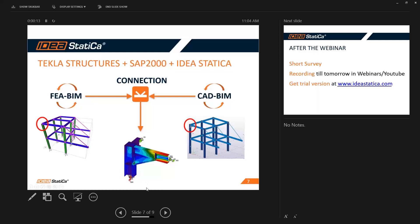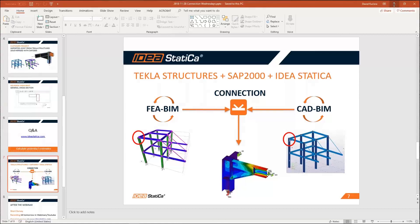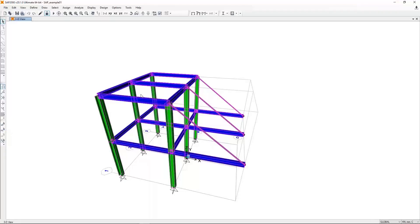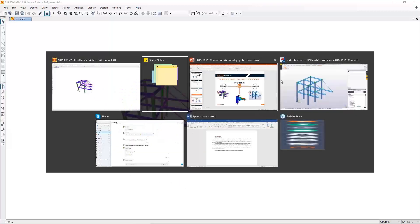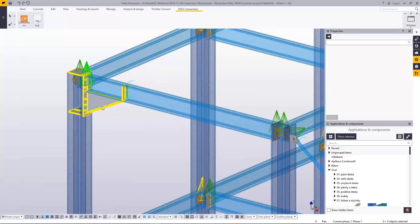Hello everybody. It's a pleasure for me to introduce the power of the BIM links. We will merge the Tekla project — meaning a model created completely in Tekla — with the global analysis model from SAP 2000, and you will see how we can do it very quickly and then check the connection in IDEA StatiCa. Here is SAP 2000 and here is the same structure in Tekla 2018 — joints are completely done with the final design: plates, bolts, and welds.